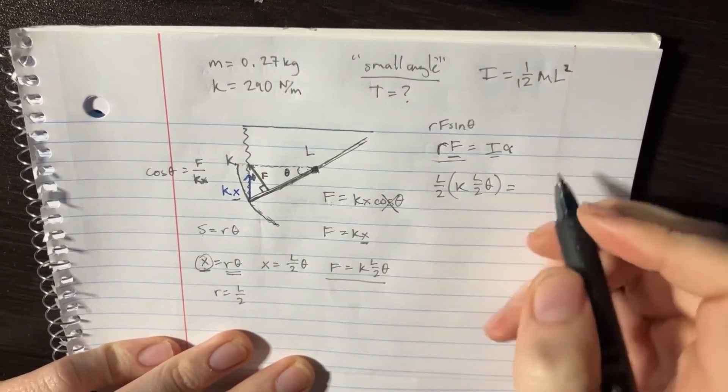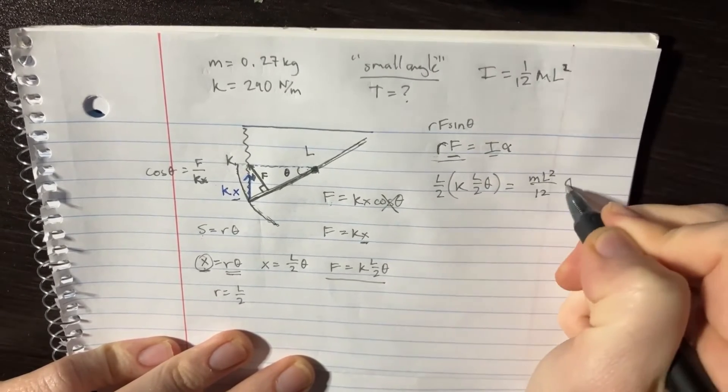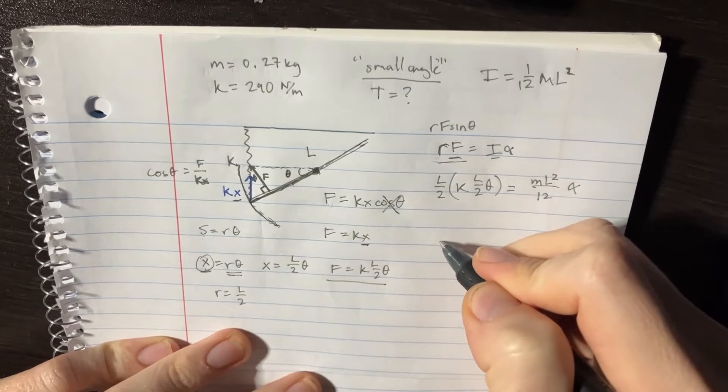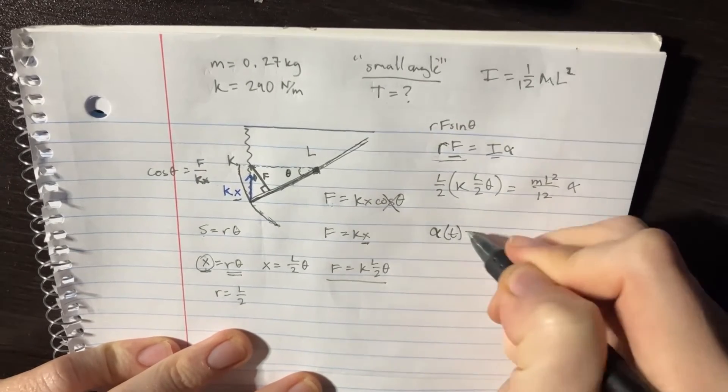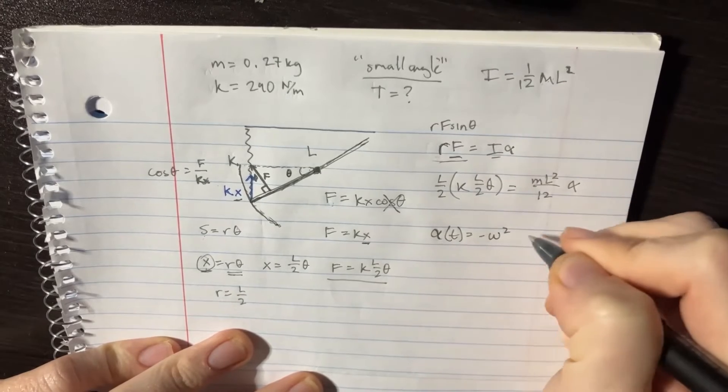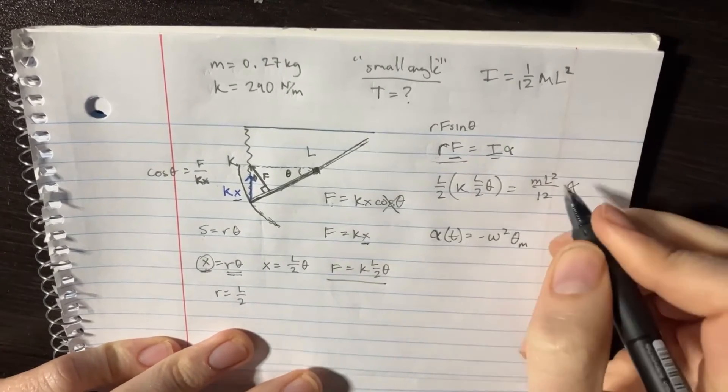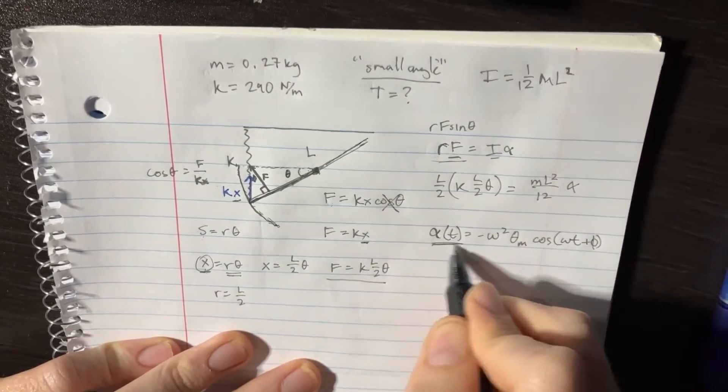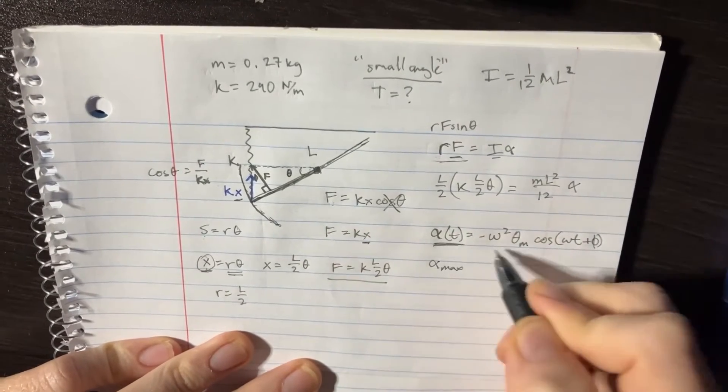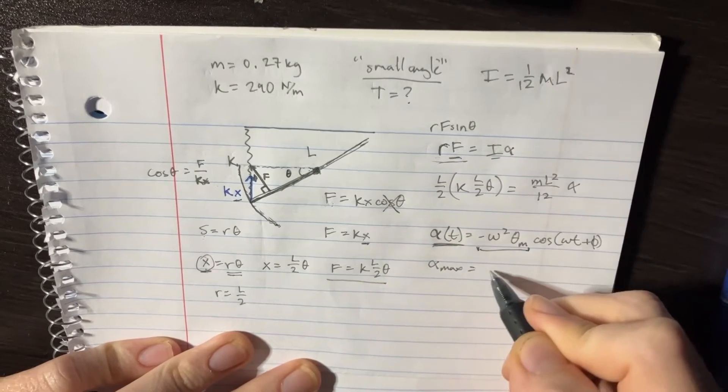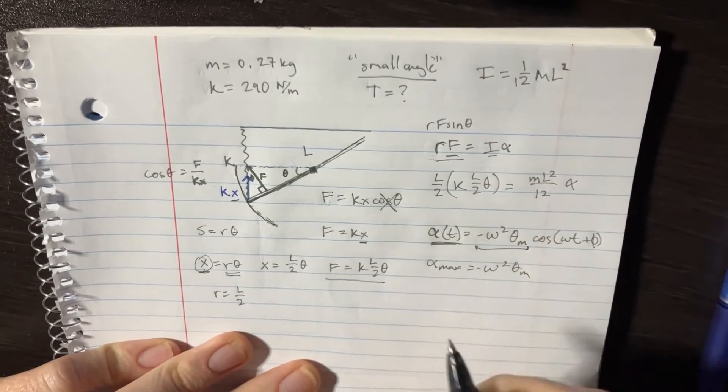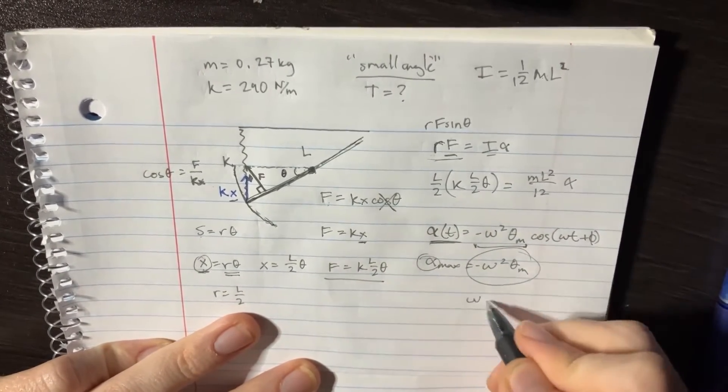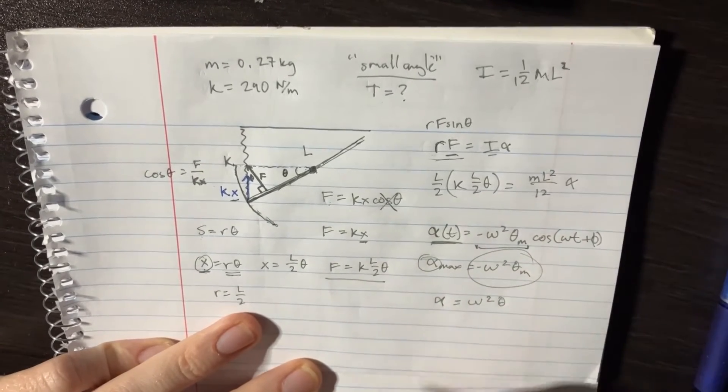And we can plug that into there: we're going to get M L squared over 12, and we have alpha. Now if you remember this equation, a_t is equal to negative w squared, and then this thing - it's theta max cosine of wt plus that. Well remember that a_max is essentially this part, so w squared. So a is actually equal to w squared theta, and that's what we're going to plug into there.